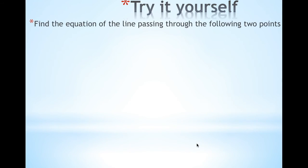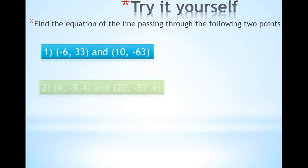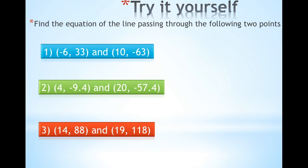I want you to try it yourself. Find the equation of the line passing through the following two points, exactly like I did in the last slide. Here are three sets of points. Take a second and find the slope, then algebraically find b.